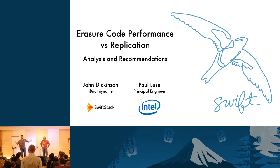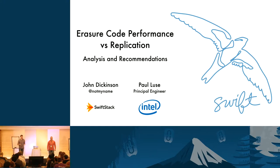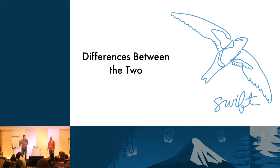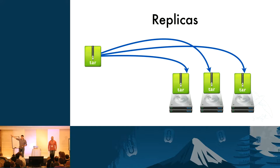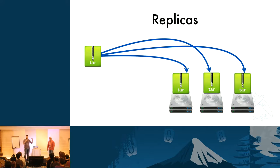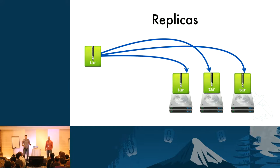So the first thing we want to talk about is: we've got erasure codes — what in the world does that mean and what's different now? Historically, when Swift was first written, it was written to support durability by using triple replication, which simply means that you take one piece of data and store it multiple times in the system. Swift does that intelligently so that it stores each copy on multiple physical failure domains, whether isolated by drive, server, rack, or even data center.